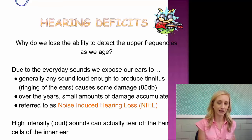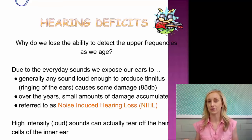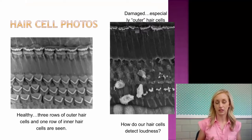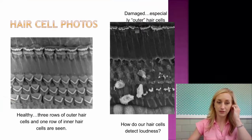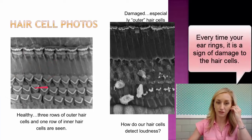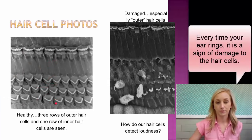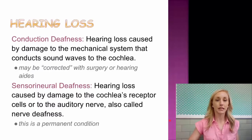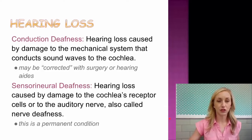High-intensity sounds can actually tear off the hair cells in the inner ear, causing noise-induced hearing loss. In these pictures, you can see on the left healthy three rows of hair cells in the inner ear, and on the right are damaged hair cells caused by exposure to loud sounds.